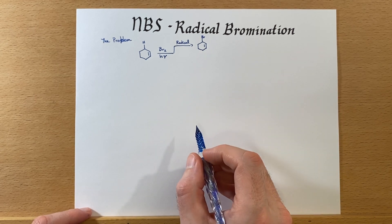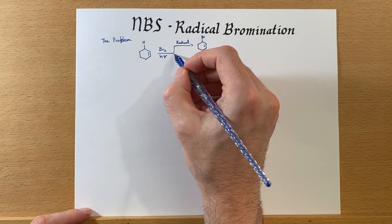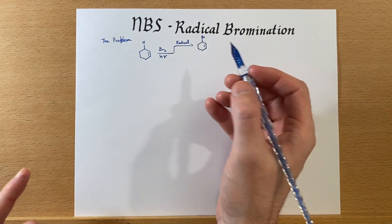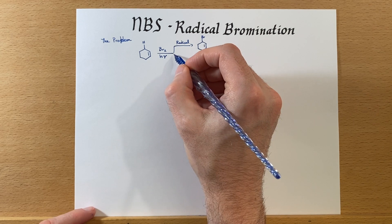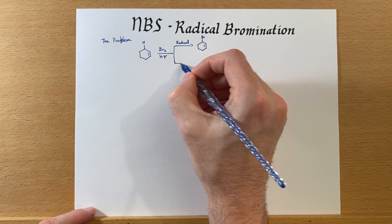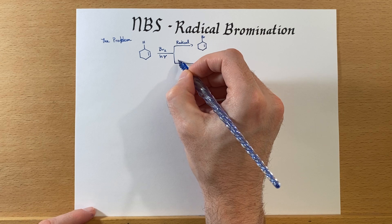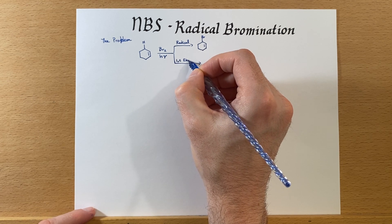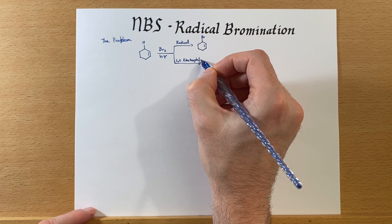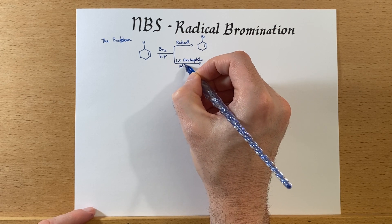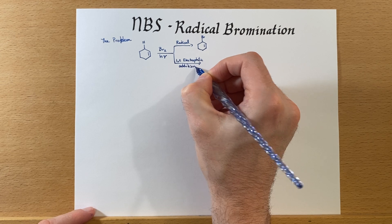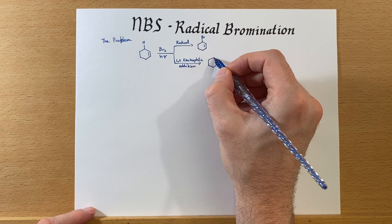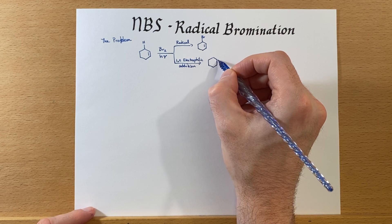However, that's not the only possible reaction. We've already discussed one of these. What would happen if we add bromine to an alkene? Well, we could get 1,2-electrophilic addition. And that's not what we would like, but it's not really avoidable.